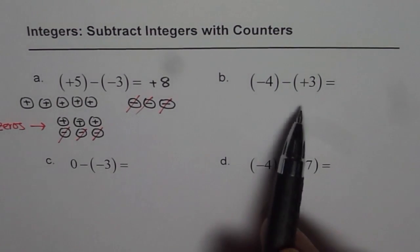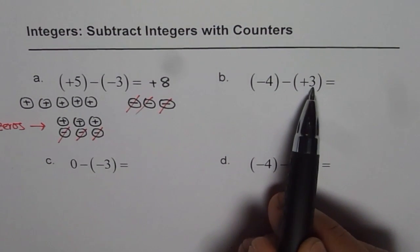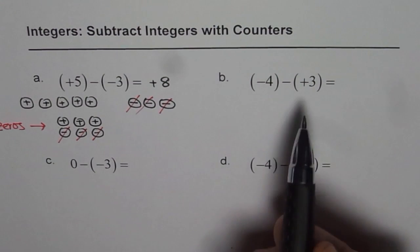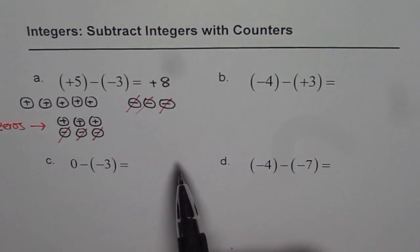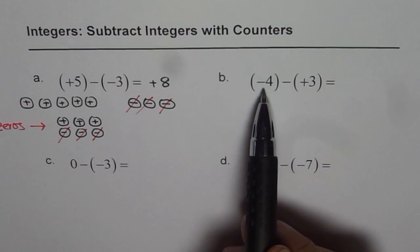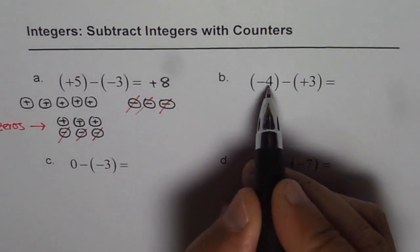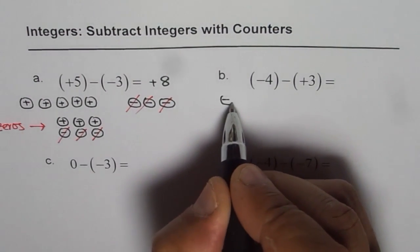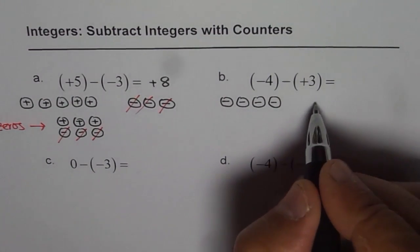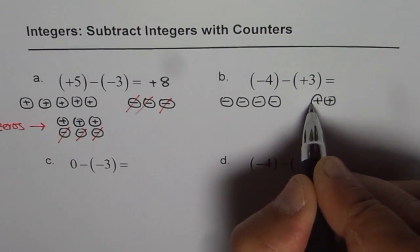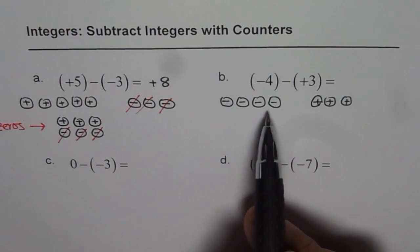Let us do the same trick on the second question. This time we have to take away positive 3 from minus 4 — that is a better way of reading this equation. Let us draw counters to represent this situation — we call it modeling. Minus 4 means 4 negative counters: 1, 2, 3 and 4. So from here we have to take away positive 3. So these are our positive 3.